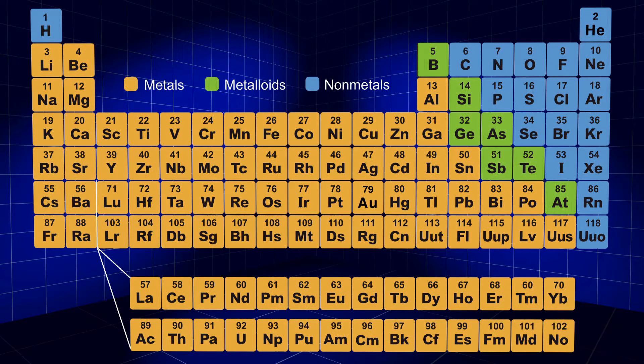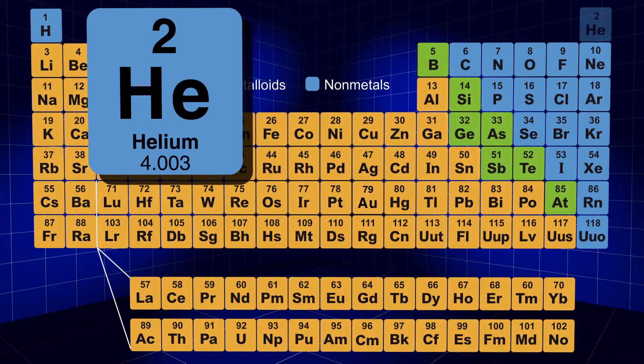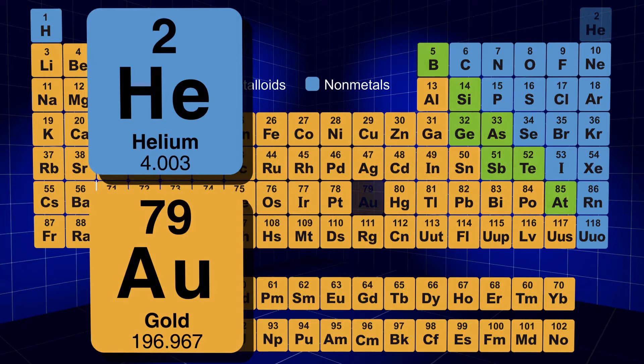Additionally, the lighter elements, meaning they have less matter in their atoms, are toward the top of the table, such as gases like helium found in balloons. Heavier, solid elements with more atomic mass, such as gold, are at the bottom.